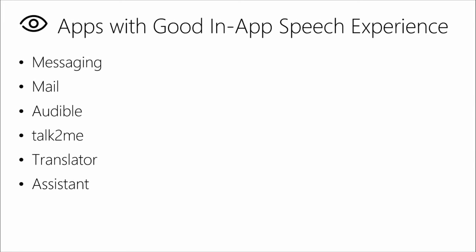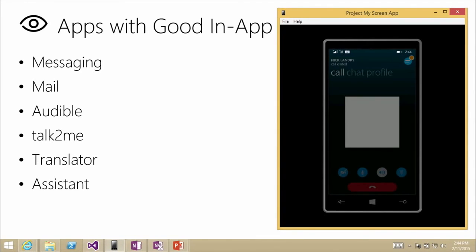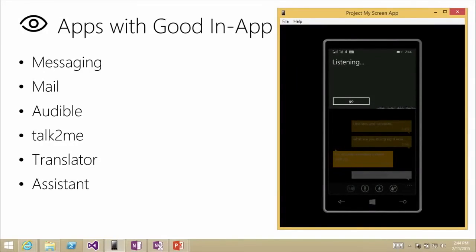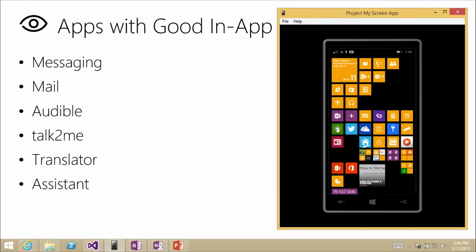Now let's look at apps with a good in-app speech experience — not just launching into the app, but inside it. First, the messaging app. When recording a message in the chat app, I hit the familiar mic button. There was an interruption — the previous Skype call was still active, so that command wasn't supported while in a call. After killing that, here I am in the messaging experience and I say: 'Hey Nick, what are you doing right now?' The default recognition experience pops up at the top of the screen, translates what I said, and drops it into the text field — a good in-app recording experience.